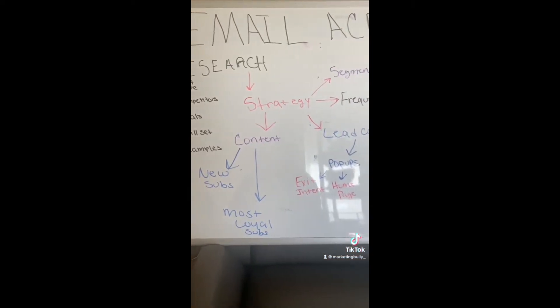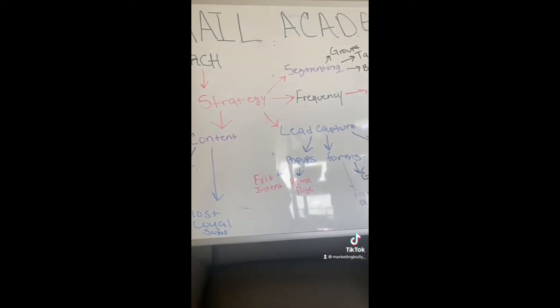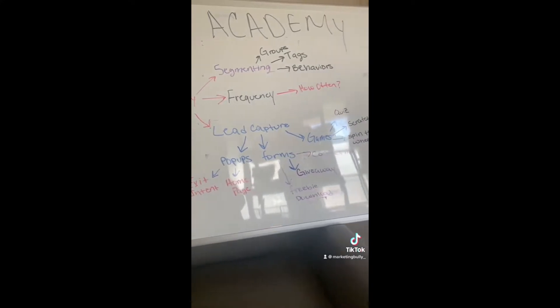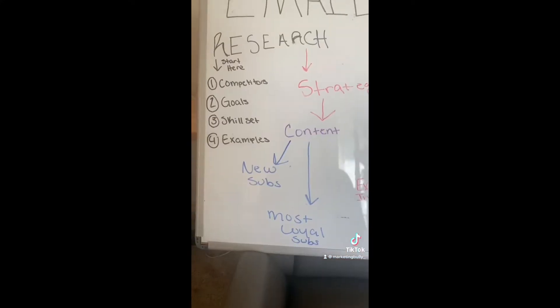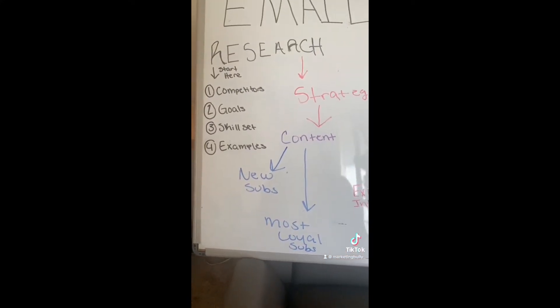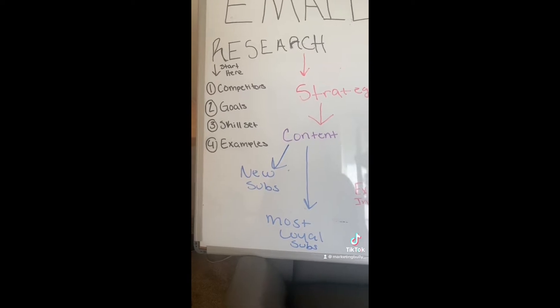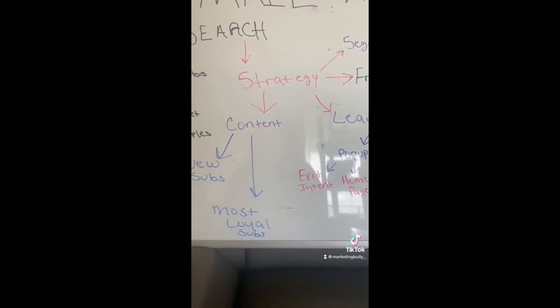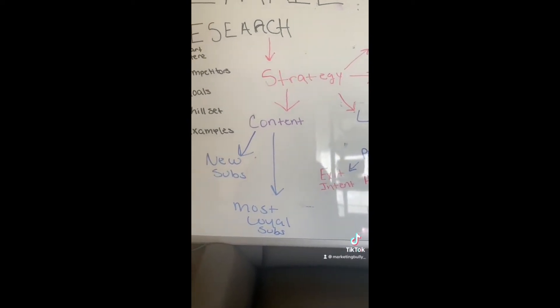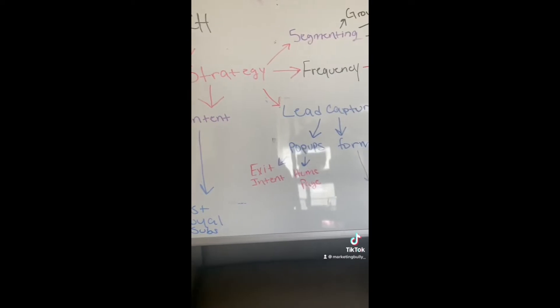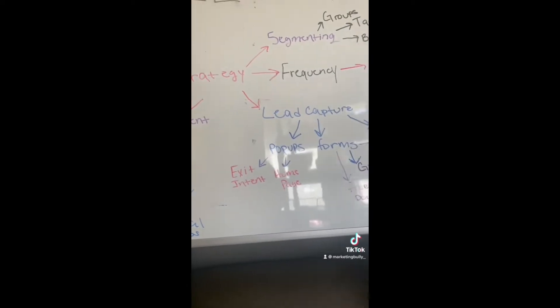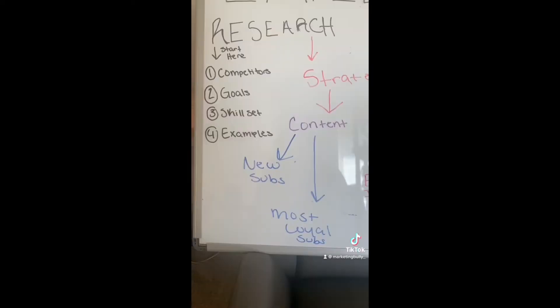I made you a board so that you can see everything written out, and I made you a graphic to go with it too. So if you want to download the free graphic, hit my bio and click download. Now, with these six steps of email marketing, you start with research, then you move to strategy. When you go to strategy, you look at your content, your lead capture, your frequency, and segmenting.